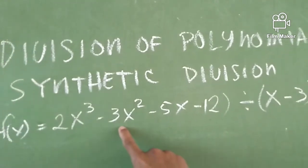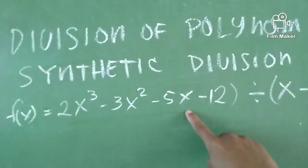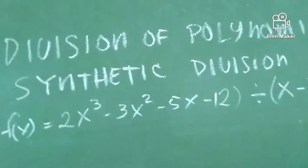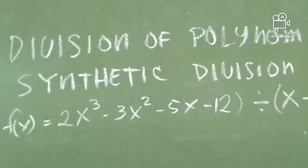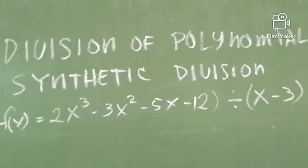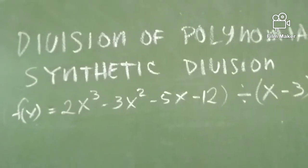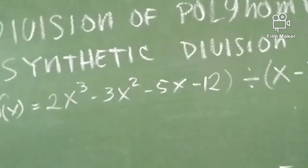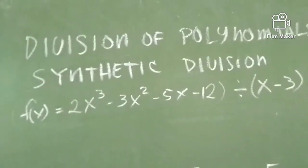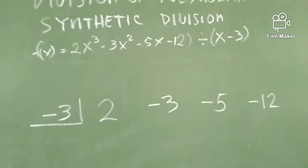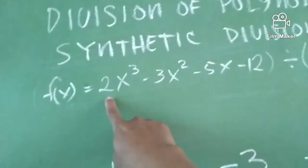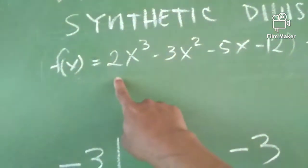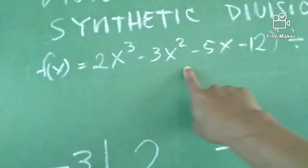2x cubed minus 3x squared minus 5x minus 12 divided by x minus 3. In our synthetic division, dapat ang makukuha nating sagot is pareho doon sa nakaraan or yung previous na nakuha nating sagot kanina. Ito ang synthetic division. Lahat ng mga coefficient niya, kailangan ilagay muna natin siya sa standard form. Naka-arrange na siya sa standard form — descending form.